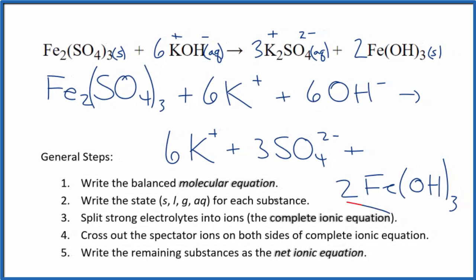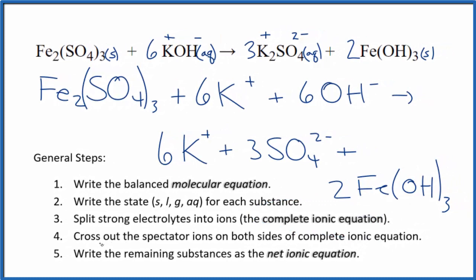So this is the complete ionic equation. Now we cross out the spectator ions. They're on both sides. The only thing that's the same in our reactants here and in our products, that's those six potassium ions. Cross those out. They're spectator ions. What's left, that's our net ionic equation for Fe₂(SO₄)₃ plus KOH.